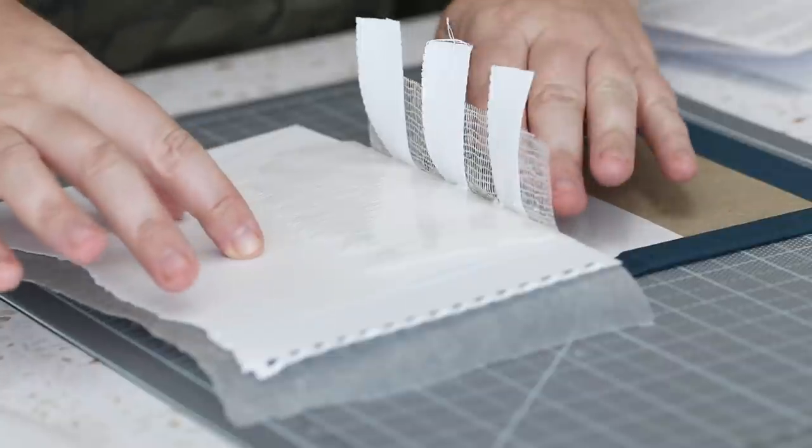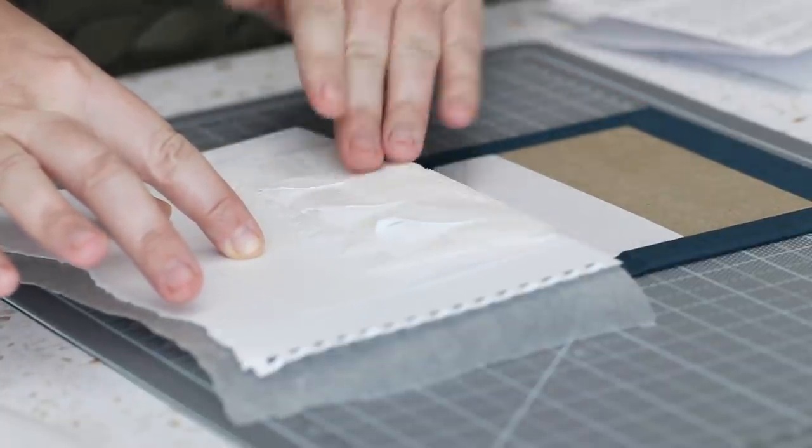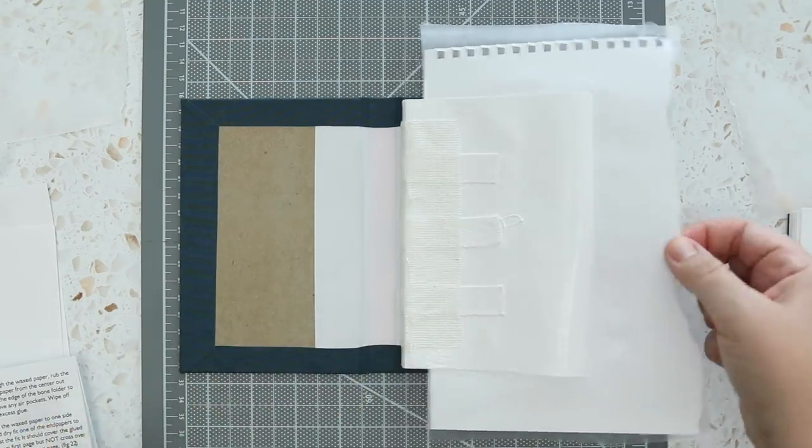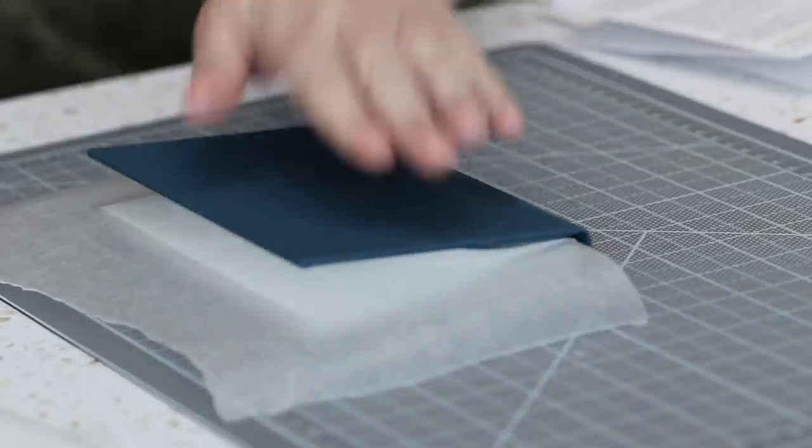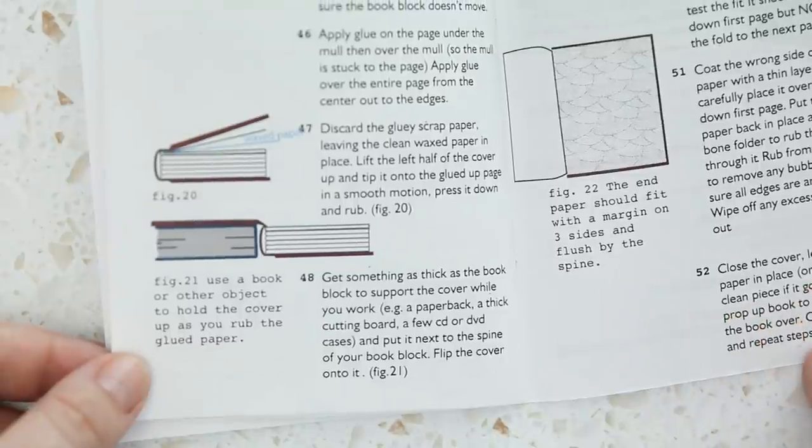I don't know what the solution for that is, but I just re-squared it as I worked and applied glue to the bottom and top of the mull and the tapes. Then it says to lift the left half of the cover up and tip it onto the glued up page in a smooth motion, press down and rub.